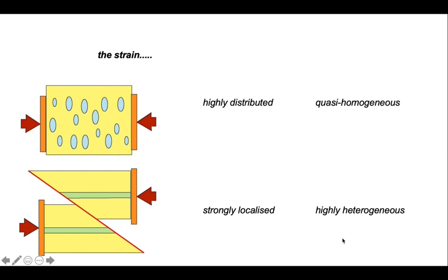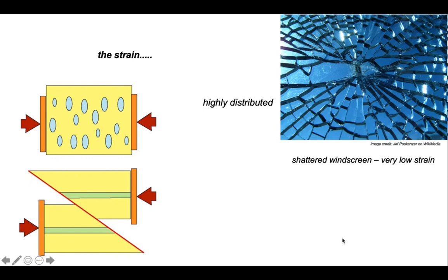This allows us to make a point, because it's tempting to suggest if deformation is highly distributed, it is also a high strain. Consider a shattered windscreen in a car. There are fractures all the way through it, so there's a highly distributed dispersed fracture array throughout the windscreen. But the windscreen itself can retain its original shape, so it has a very low strain, very low distortion to the windscreen, even though it's highly shattered. So the distribution of deformation is not a proxy for the strain state.